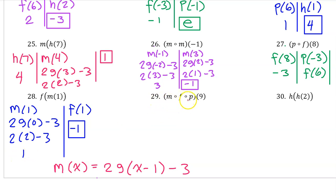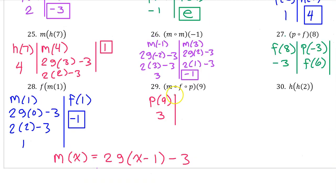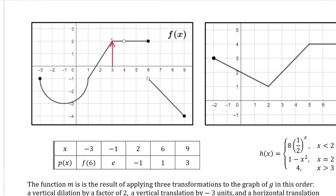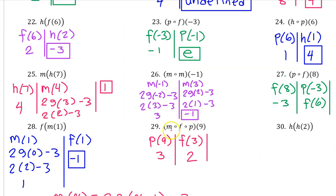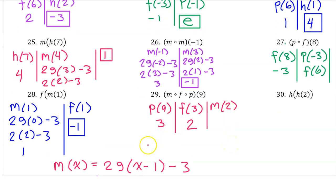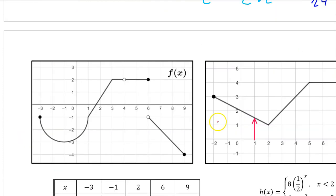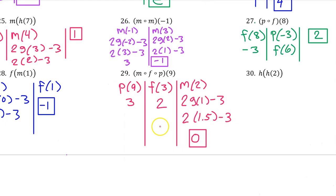Number 29. For the open circle composite notation we work from right to left, so we begin with P at 9. P at 9 is 3. Moving to the left we evaluate F at 3. F at 3 is 2. Moving left once more we evaluate M at 2. Plugging 2 in for X: 2 minus 1 is 1, so we get 2·G(1) − 3. G at 1 is 1.5. 2 times 1.5 is 3, and 3 minus 3 is 0.